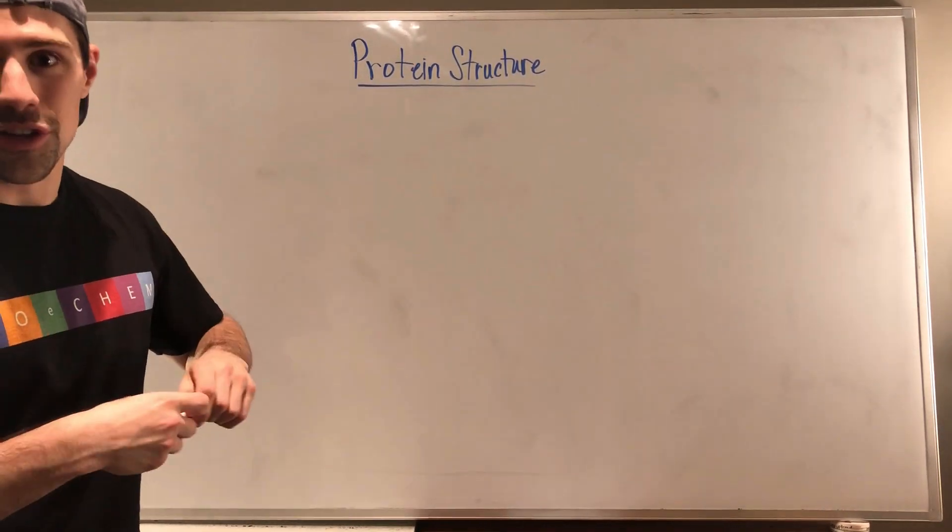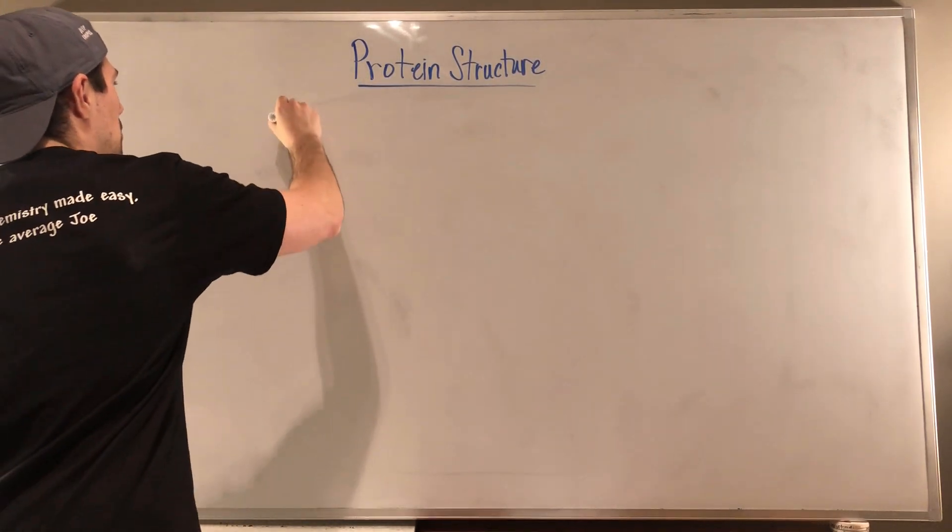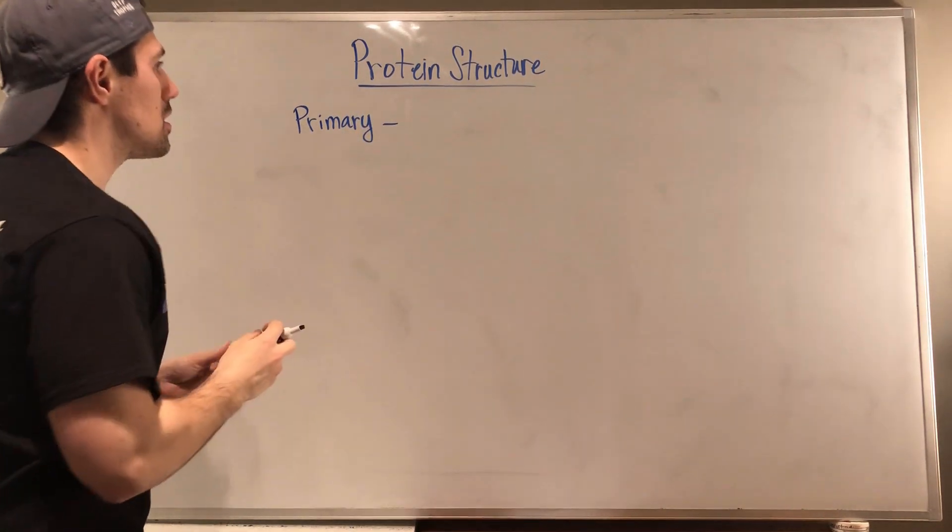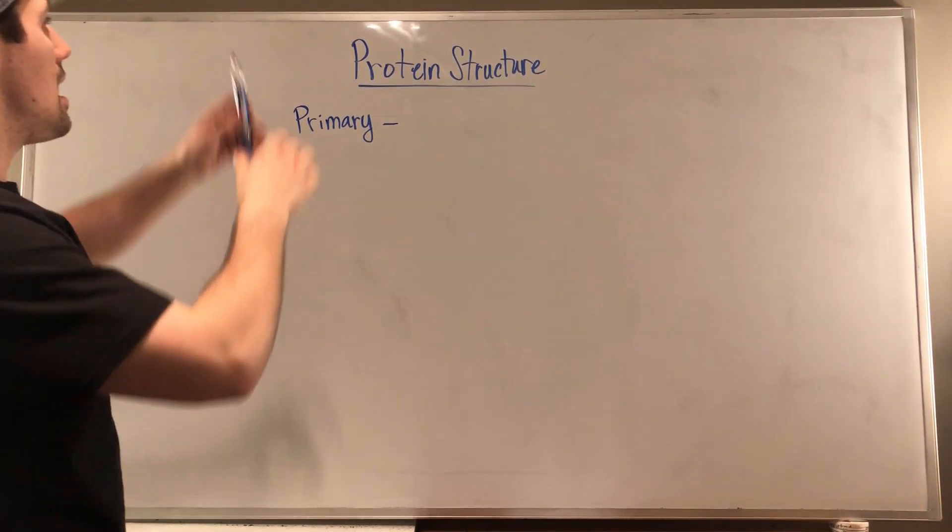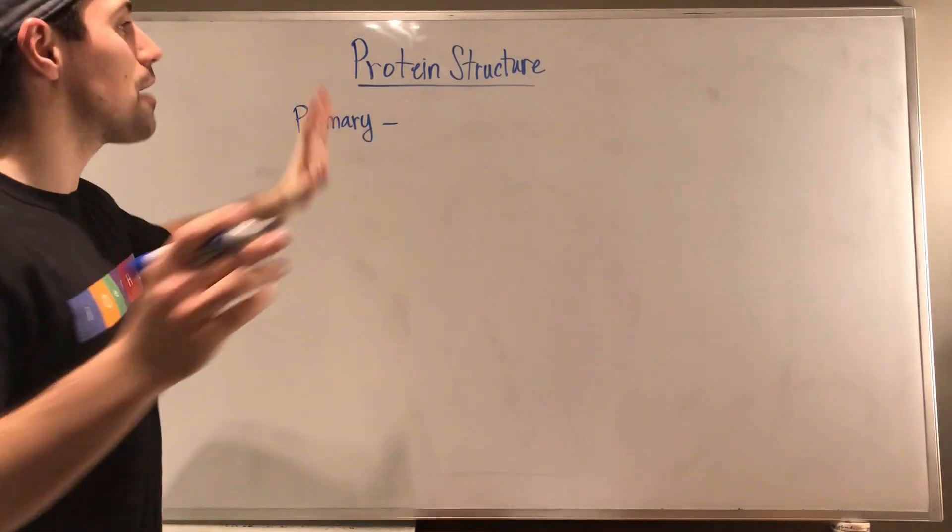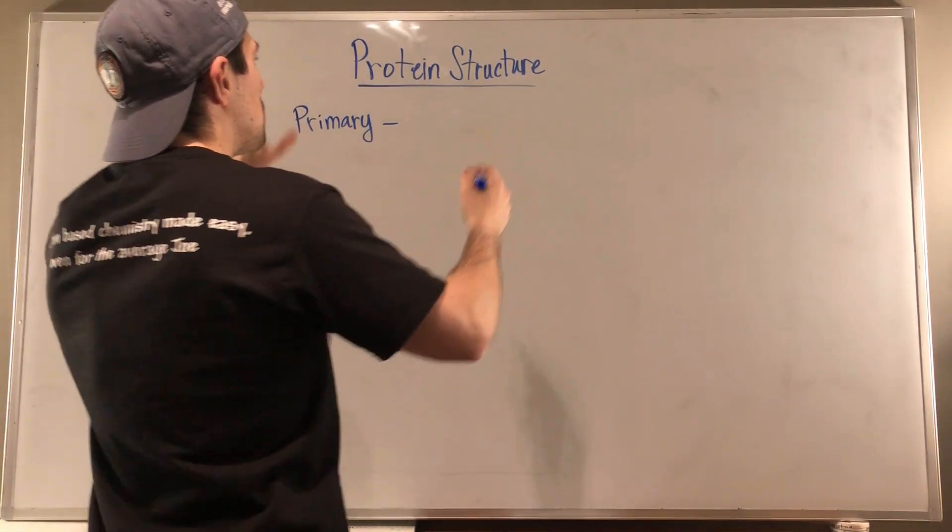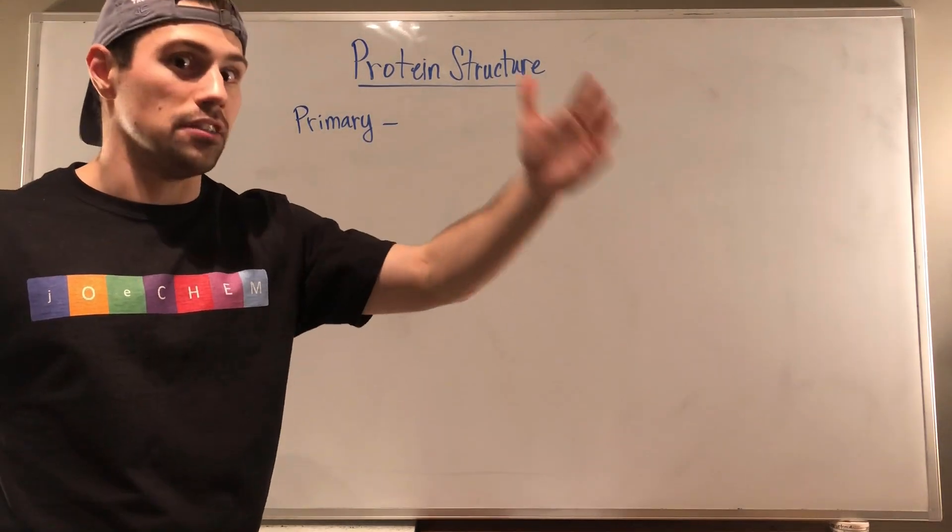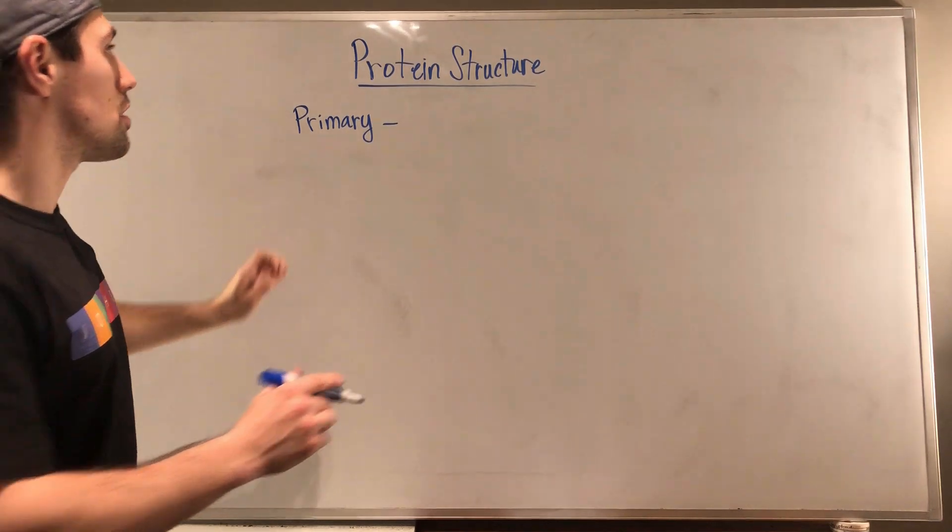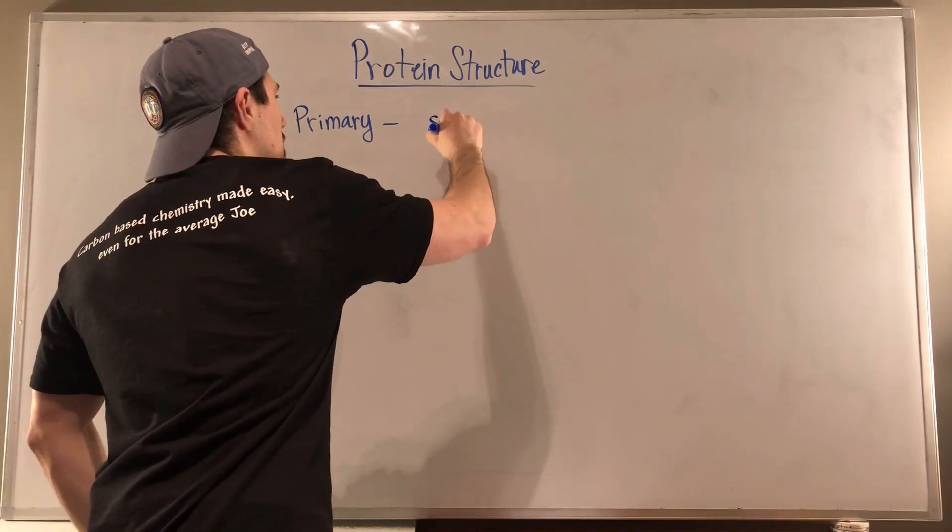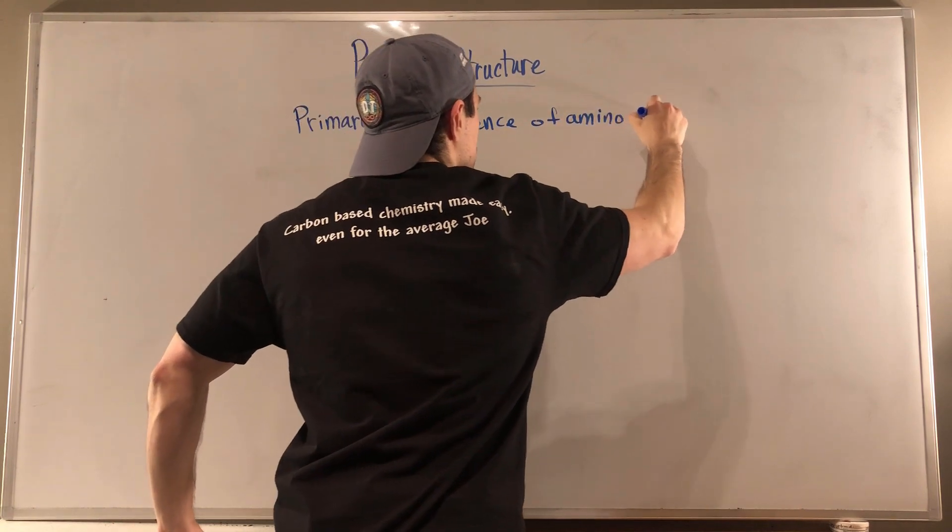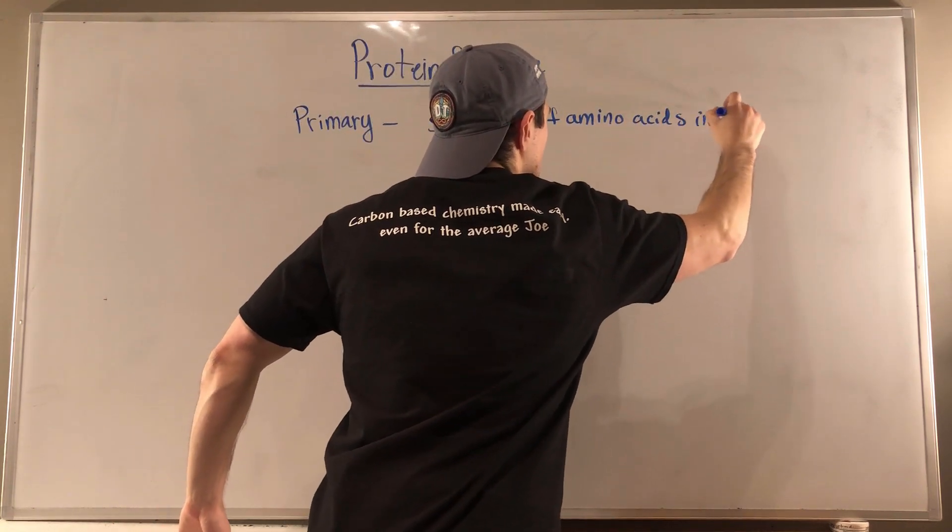So protein structure. Right off the bat, we're going to talk about primary structure. So in a protein, proteins consist of long peptides. So a protein's primary structure is just the sequence of amino acids in the protein.